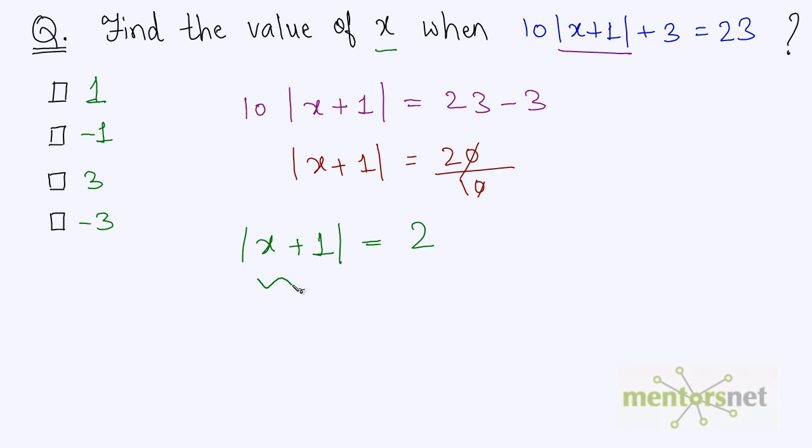Now again let's substitute this x plus 1 as A. So mod of A is equal to 2. Now we know that mod of 2 is equal to 2 and mod of minus 2 is also equal to 2. So A can be 2 or A can be minus 2. Therefore we have A as 2 or minus 2.